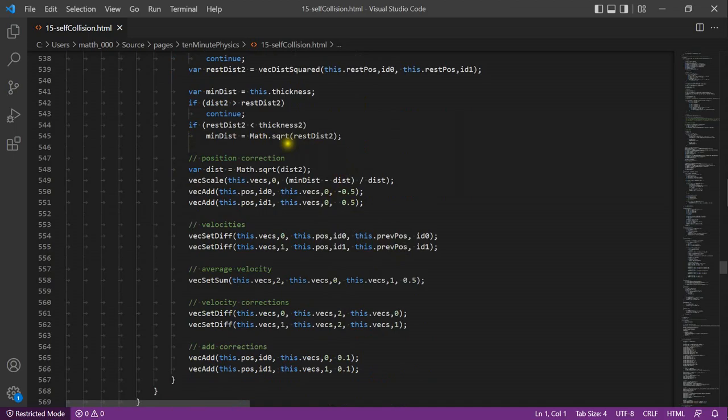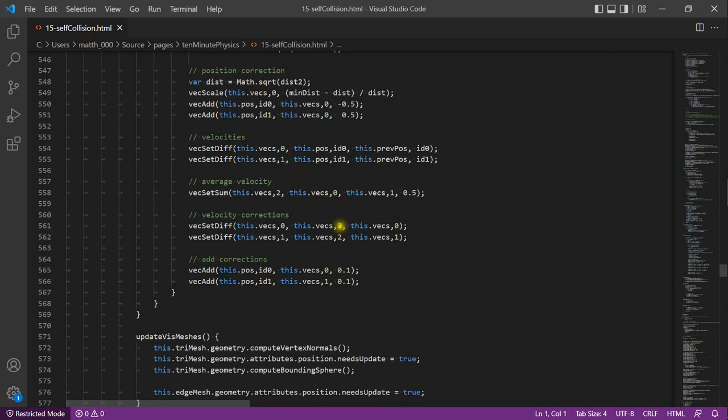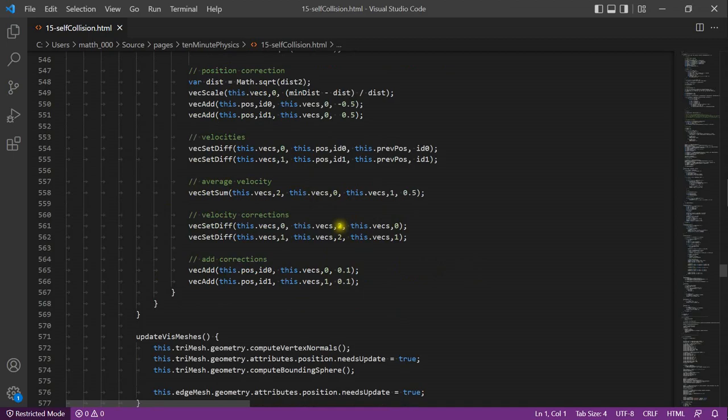Here, we can see the friction method. We first compute the velocities of the two particles. Then we compute the average velocity. Next, we modify the velocities as I explained in the slides.